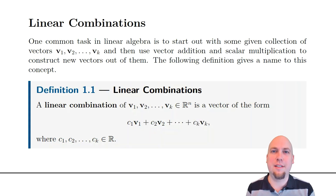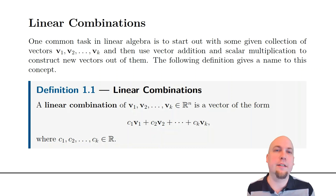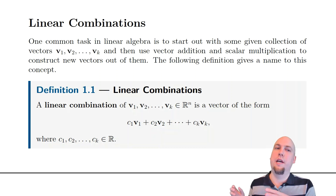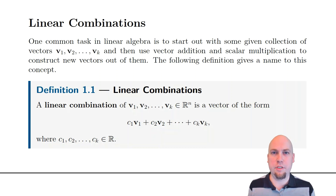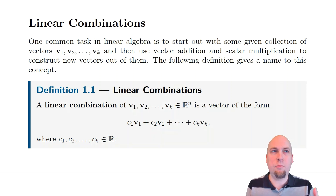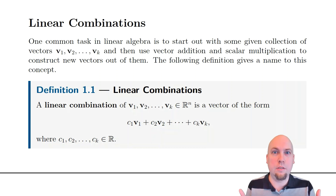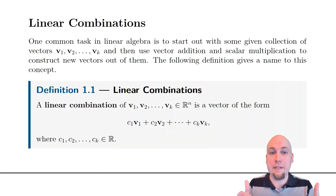Hey folks, my name is Nathan Johnston and welcome to lecture 3 of Introductory Linear Algebra. Today we're going to introduce something called linear combinations. The idea is that in the previous two lectures we introduced two vector operations: vector addition and scalar multiplication. Linear combinations are just what you get if you do those two vector operations over and over again — a whole bunch of scalar multiplications and vector additions.